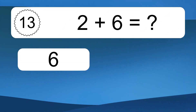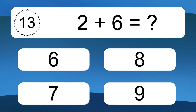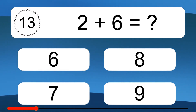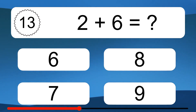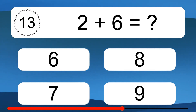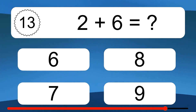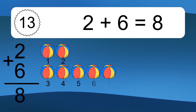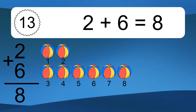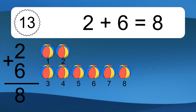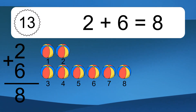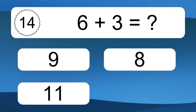2 plus 6 equals what? 2 plus 6 equals 8. Let's count it. 1, 2, 3, 4, 5, 6, 7, 8. 6 plus 3 equals 9.